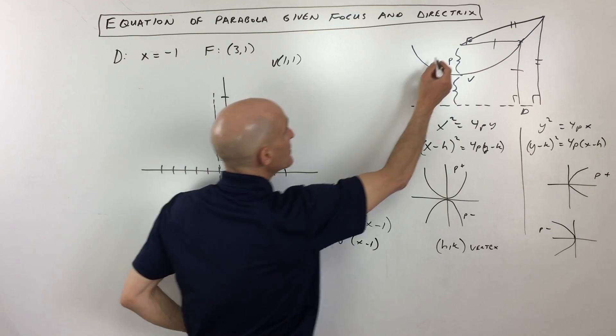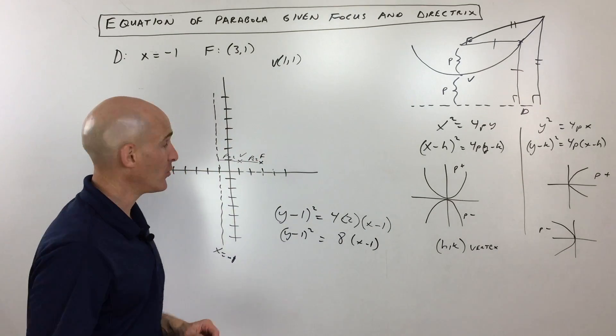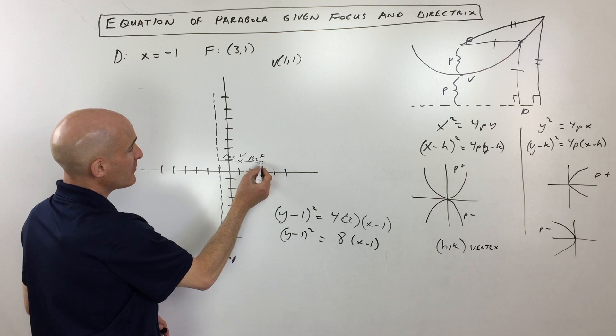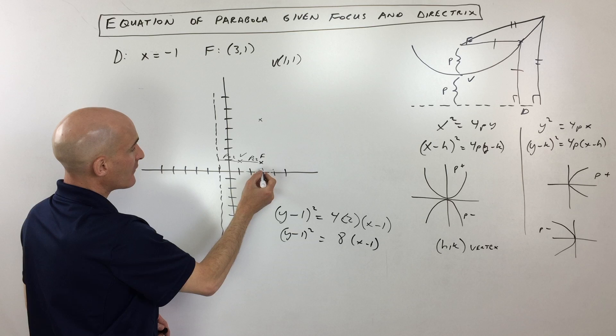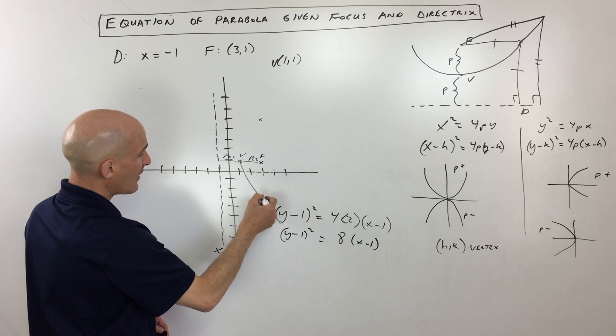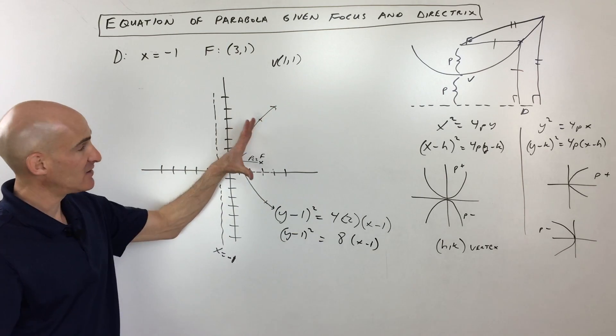Okay, so that means four p in this case is eight, so at the level of focus it's going to be eight wide. From here I'm going to go up four—one, two, three, four—that's a point on our graph, and down four—one, two, three, four. And so that gives us an idea about how wide the parabola is.